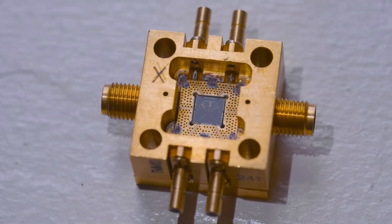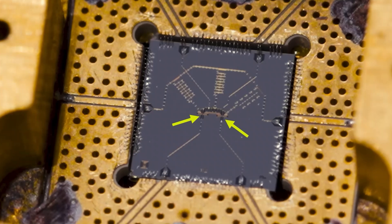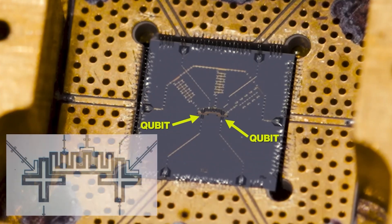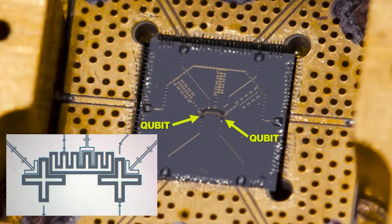Next, we have the quantum chip itself. This is a small chip, usually a square about one inch or so on each side, and contains all of the qubits that we'll use to do the actual quantum computing.